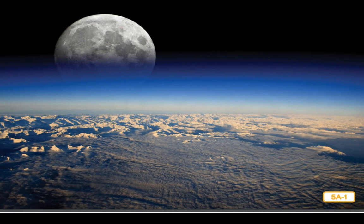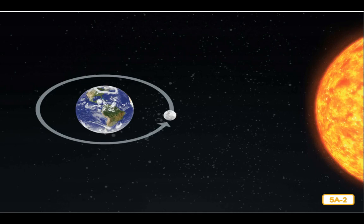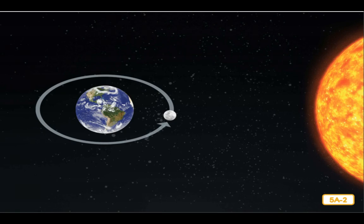While earth orbits or revolves around the sun, the moon orbits or revolves around earth. It takes 365 days or one year for earth to orbit the sun. It takes a little more than 27 days — about one month — for the moon to complete a trip around earth. The moon also rotates on its axis as it orbits earth, rotating exactly once per orbit. This remarkable feature keeps the same side of the moon always facing earth, meaning we never see the back of the moon. The moon's appearance changes depending on where it is in its orbit.